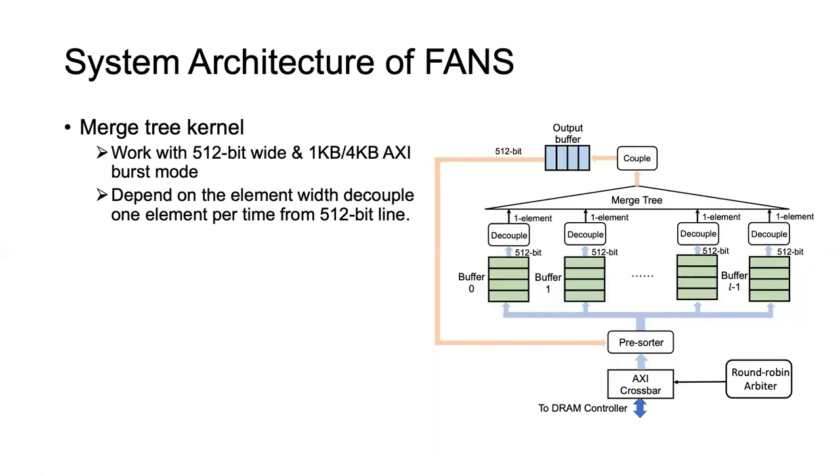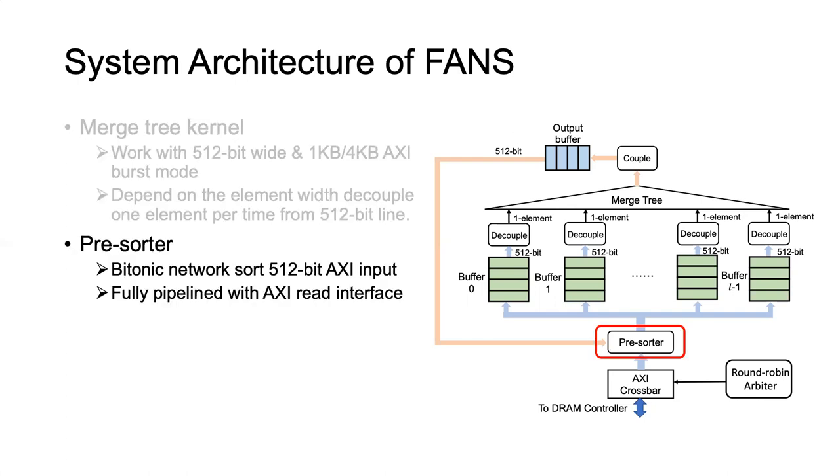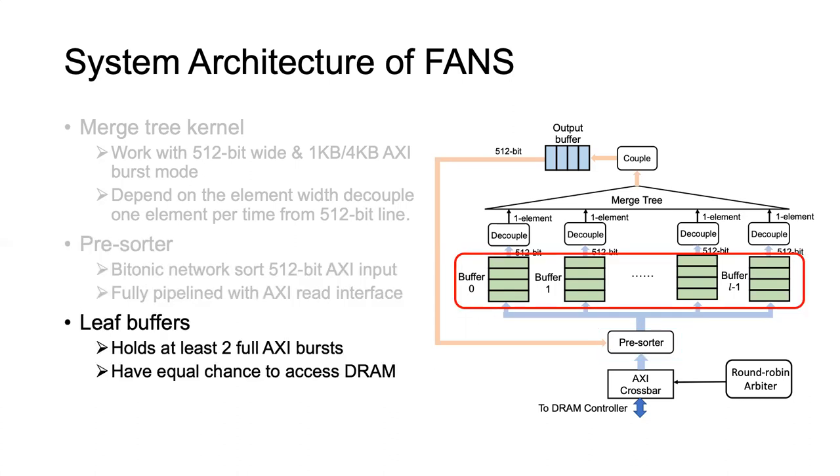With this background, let's see how we can implement the FANCE system on Smart SSD. The FPGA kernel in both the sorting phase and merging phase is the merge tree. We have a merge tree work with the FPGA DRAM through the standard AXI burst mode. Since each AXI transaction is 512-bit wide, we have to decouple one element per time to feed it into the corresponding leaf node. We also have a pre-sorter inserted into the AXI read pipeline that can sort the 512-bit AXI data in order so we can potentially reduce the number of passes. Last but not least, for each leaf node we also have a corresponding buffer that caches at least two full AXI bursts. We make sure that each leaf buffer has an equal chance to access the DRAM.